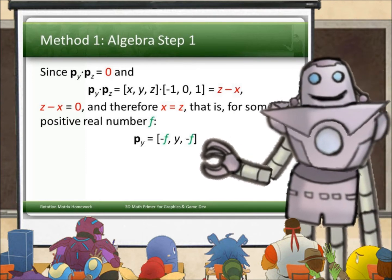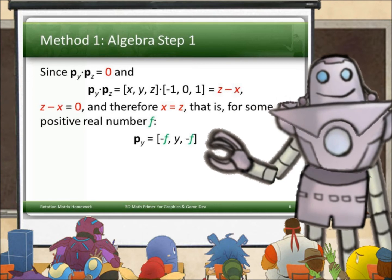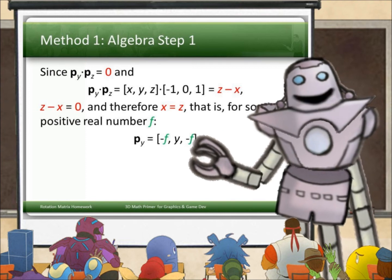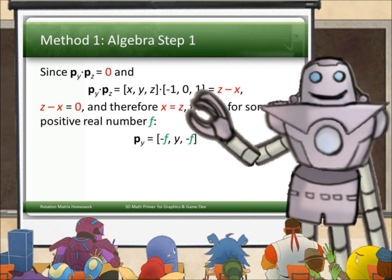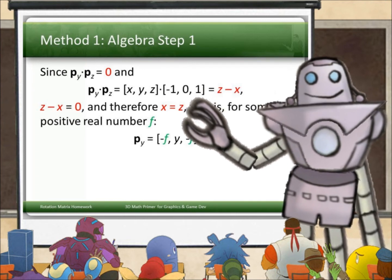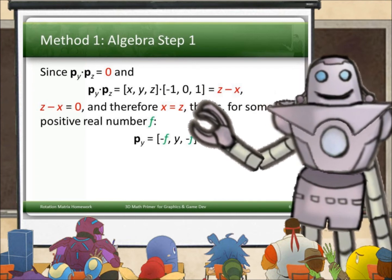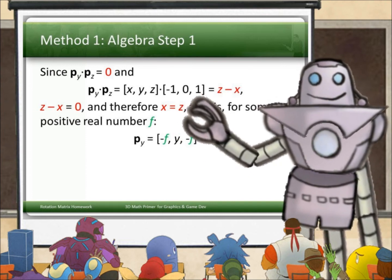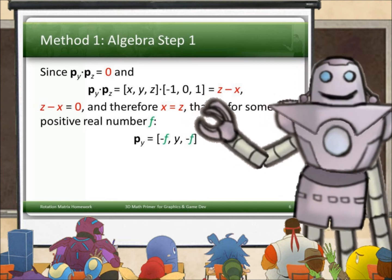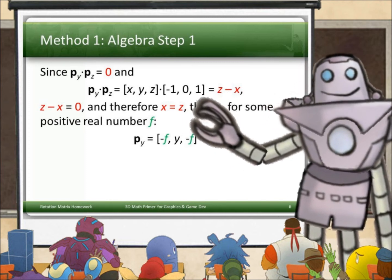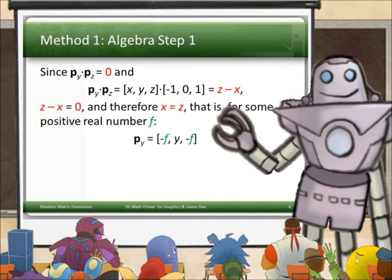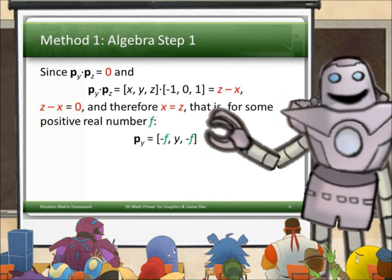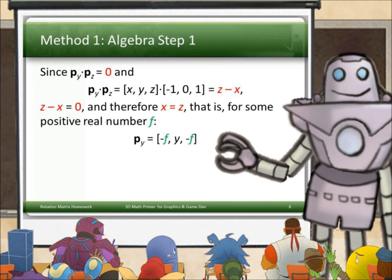So method one, algebra. Now we want p_x, p_y, and p_z to be basis vectors for a coordinate space. So they need to be orthogonal. Well, they were orthogonal in our picture. So we want, in particular, p_y dot p_z equals zero. Right. The dot product of orthogonal vectors is zero. What is p_y dot p_z? It's (x, y, z) dot (-1, 0, 1). So that's -1 times x plus 0 times y plus 1 times z, which is z - x. So we want that z - x to be zero. Okay. That means x has to be equal to z.